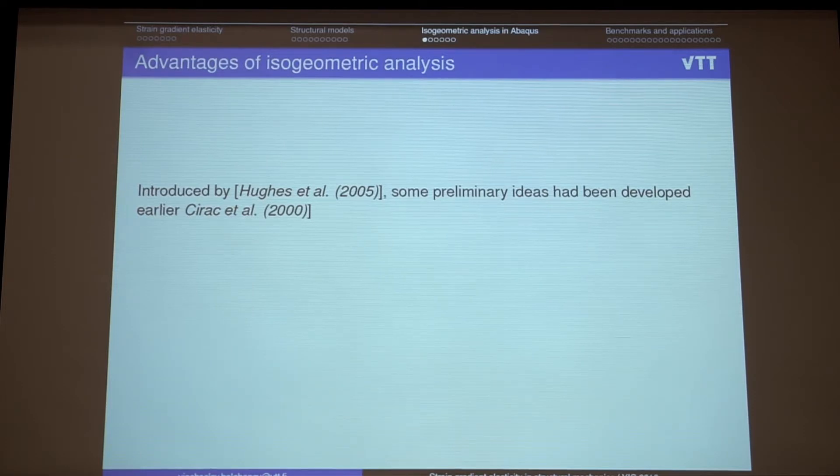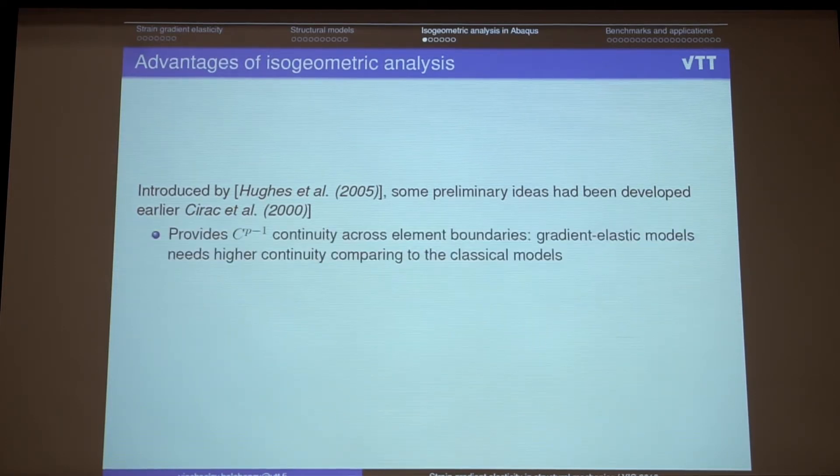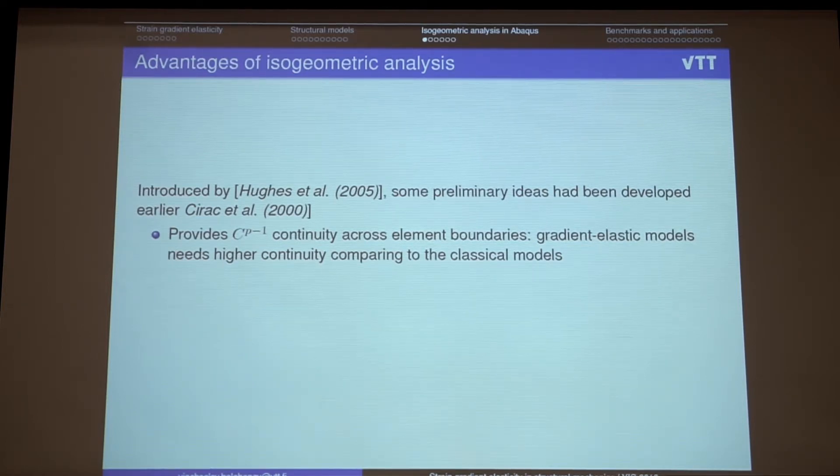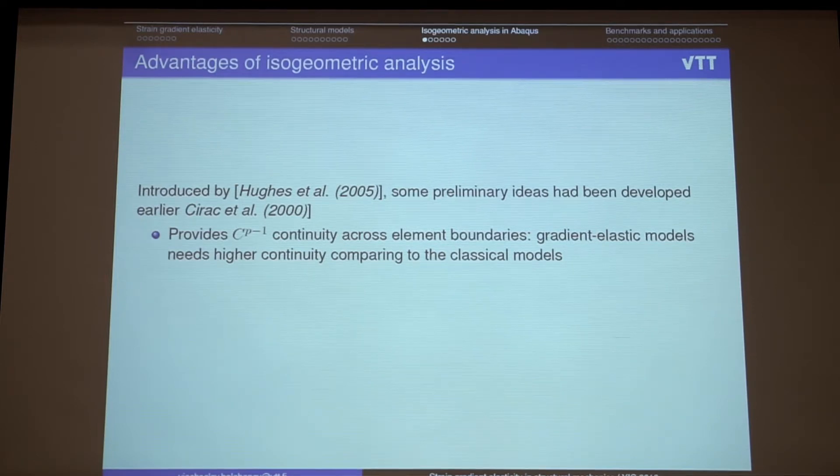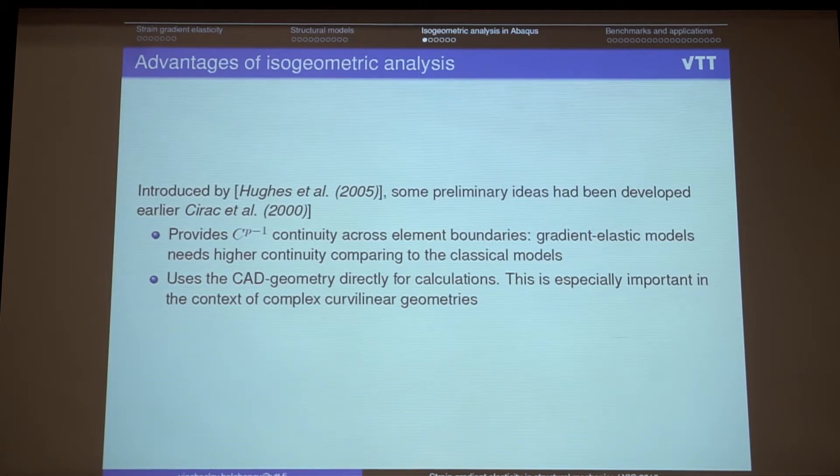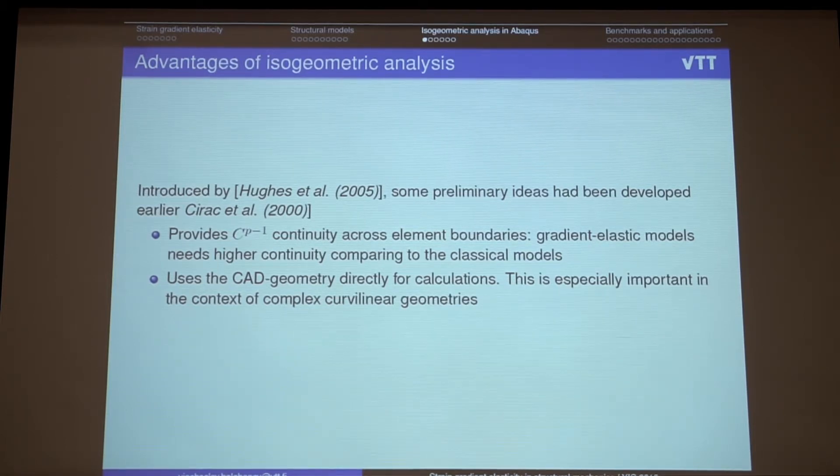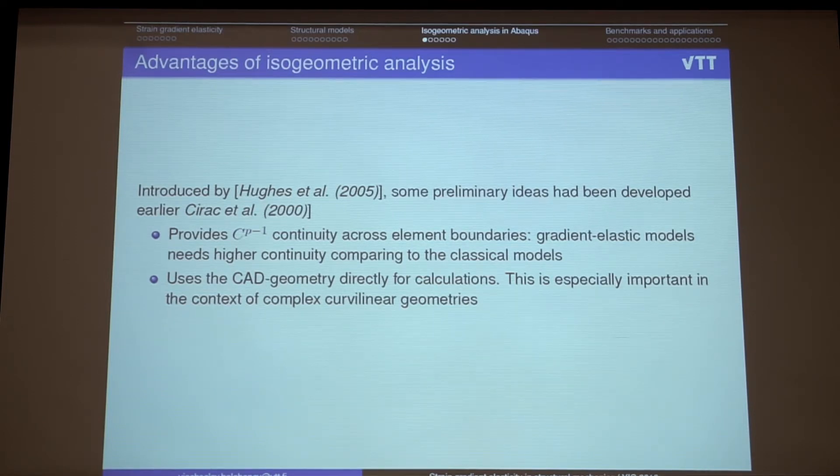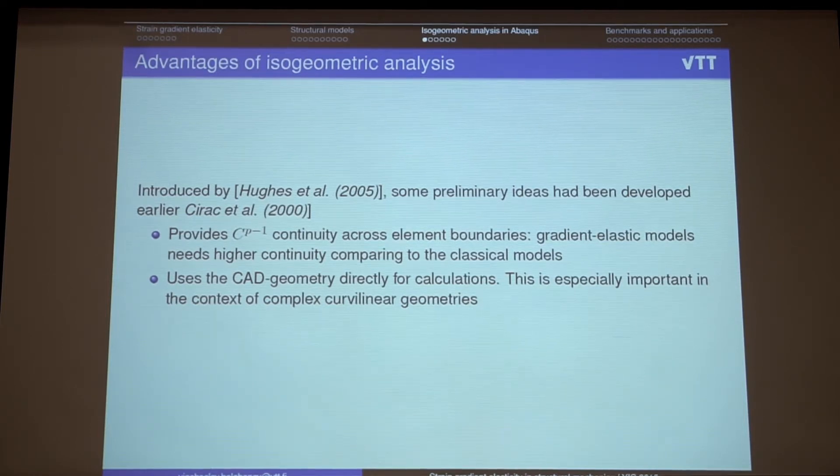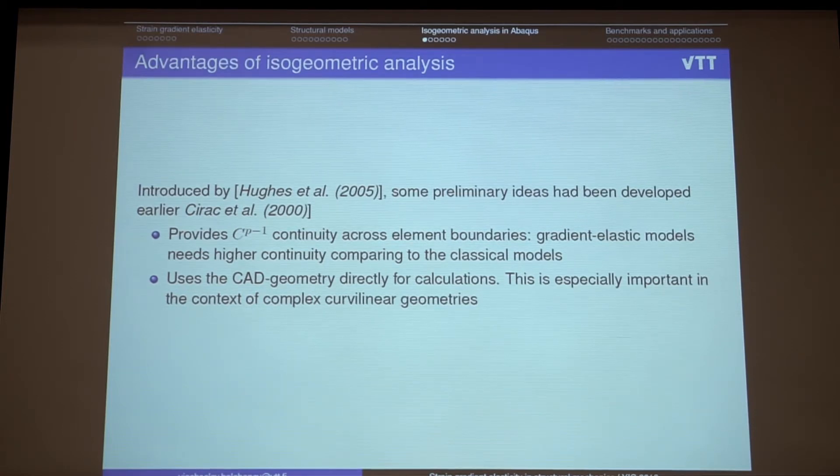A couple of words about isogeometric analysis. Why it's important to use it here. The most important advantage of the isogeometric analysis is that it provides C^(p-1) continuity. So any continuity across the element boundaries. Which is especially important for gradient elastic models because they contain higher derivatives. And they demand higher continuity. And of course the main advantage of isogeometric analysis is that we can work with complex curved geometries directly. Without meshing and without losing the exactness of the geometry.